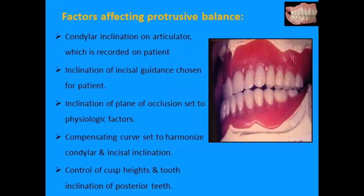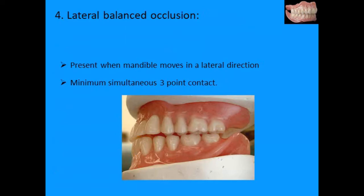The factors affecting protrusive balance are: condylar guidance recorded from the patient, incisal guidance, the plane of occlusion, compensating curves, and cusp height and tooth inclination of the posterior teeth. Lateral balanced occlusion involves minimal simultaneous three-point contact — one anterior and two posterior — during lateral movement of the mandible. It is also absent in normal dentition and is present in the completely edentulous case, preventing lever action of the denture and enhancing stability. Lateral balanced occlusion is influenced by condylar guidance, incisal guidance, cusp height, and the Bennett side shift on the working side.